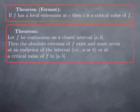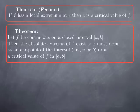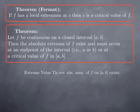We have seen in the previous video that if a function has a local extremum at c, then this value c is critical. From this we can deduce that if we have a continuous function on a closed interval, then the absolute maximum and minimum exist, and they must occur either at an endpoint of the interval or at a critical value of the function that lies in that interval. This is because of the extreme value theorem.